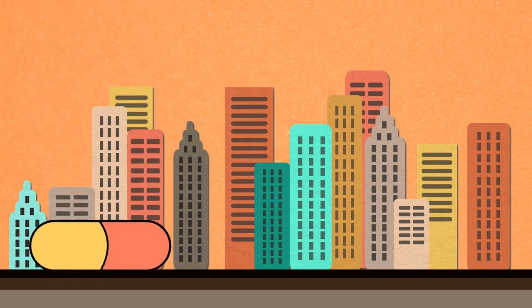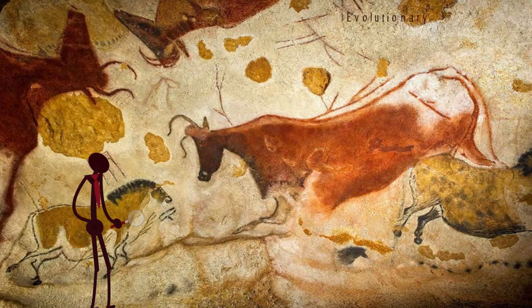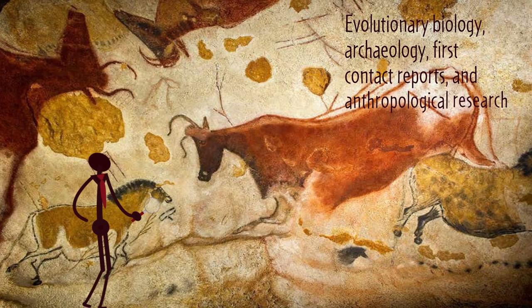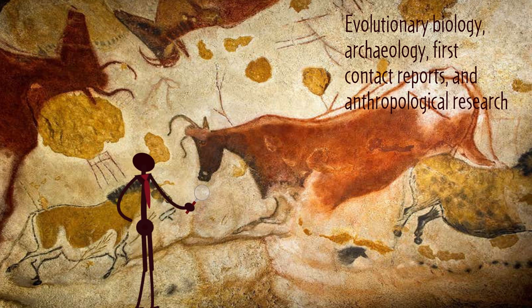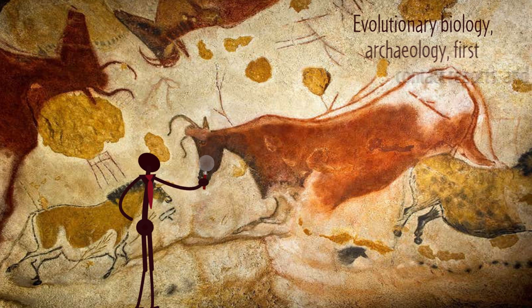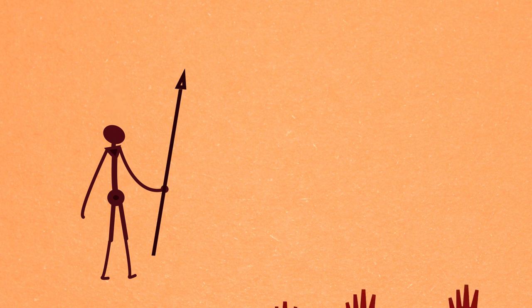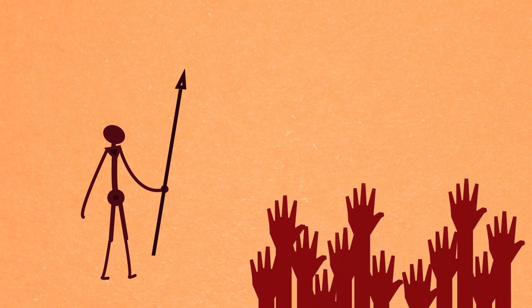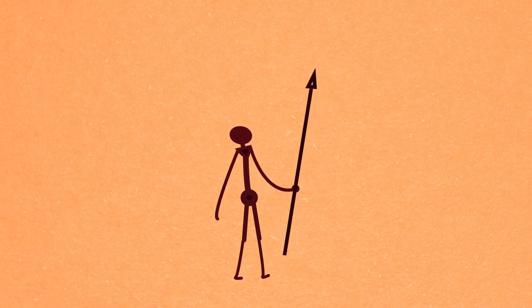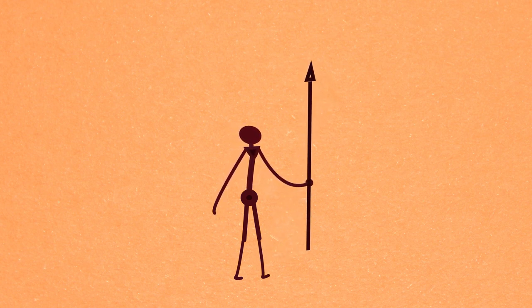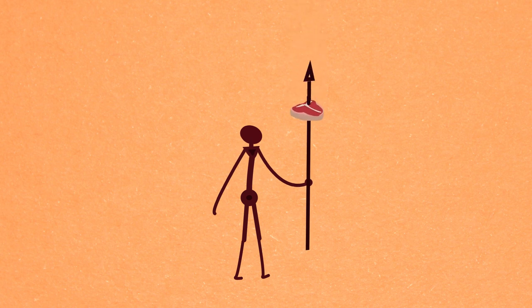Or we can examine how our ancestors actually lived by looking closely at evolutionary biology, archaeology, first contact reports and anthropological research. We know through research that for the past several hundred thousand years, our human ancestors looked like us, were as smart as we are and lived in complex, deeply intimate social groups. We know they didn't eat grain-based diets, but rather, depending on the location, a diet of meat, vegetables, seeds, nuts and fruits.